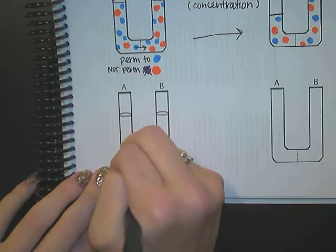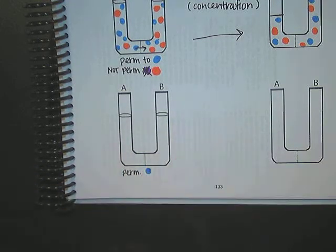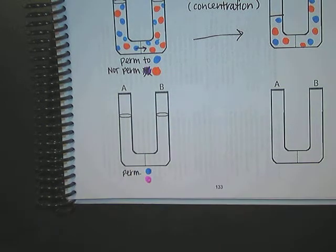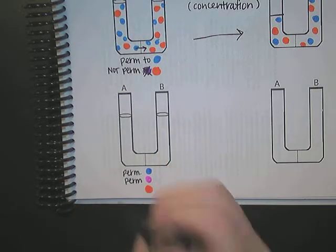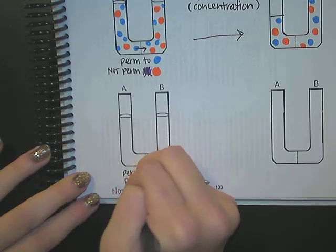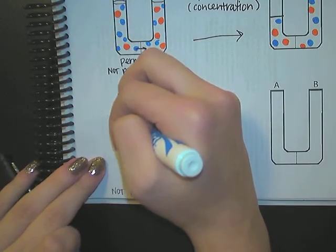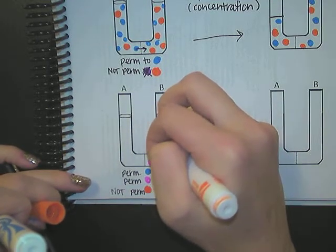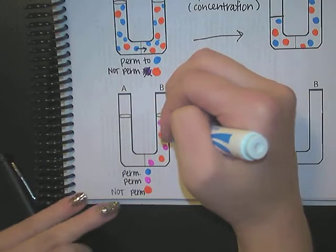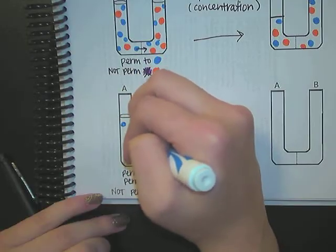Another one we'll do is let's say I have a tube filled with all three of these things. On my left, this membrane is permeable to water, it is permeable to the pink dots, but it is not permeable to the orange dots. In my solution, on my right side I'm going to put some pinks, some oranges, and some blues. And on my left side, let's say I only have blue.